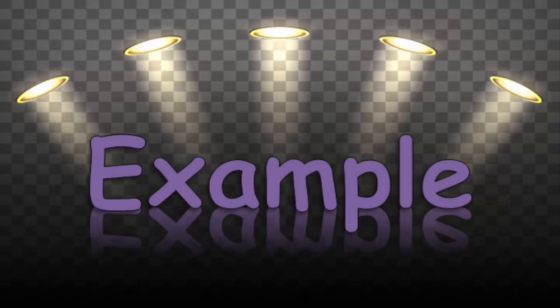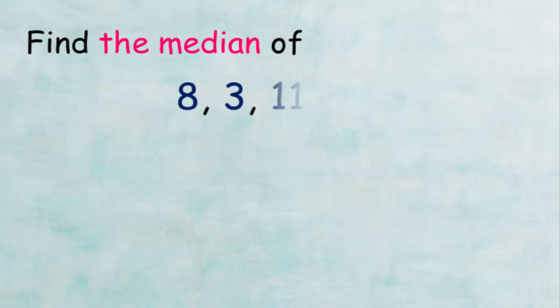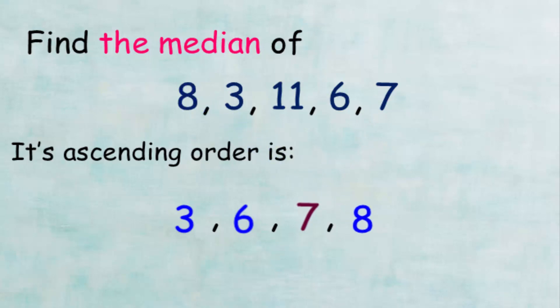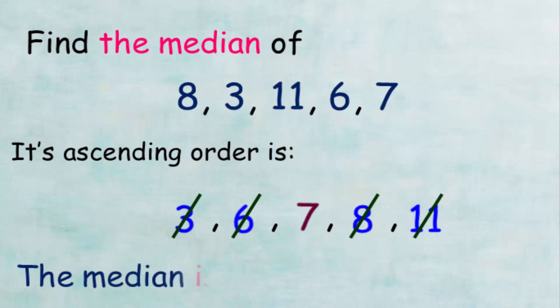Now let's see an example of how to find the median through a set of values. In this example we want to find the median of values 8, 3, 11, 6, and 7. We start by arranging these values in ascending order, and then by removing the numbers 3 and 11, and 6 and 8, we find that the median is in the middle. Therefore, the median is 7.